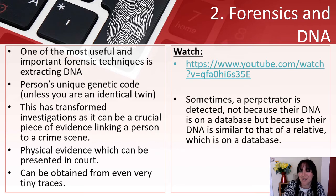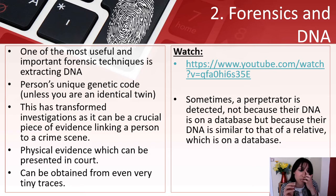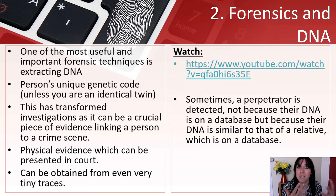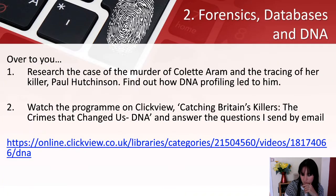Sometimes a perpetrator is detected not because their own DNA is on the database, but because their DNA is similar to that of a relative who is on the database. That's extremely interesting — it means that even people who have never been caught or aren't on the database themselves may be traceable through a relative who shares similar genetic material. Police may be able to trace you through your relative.